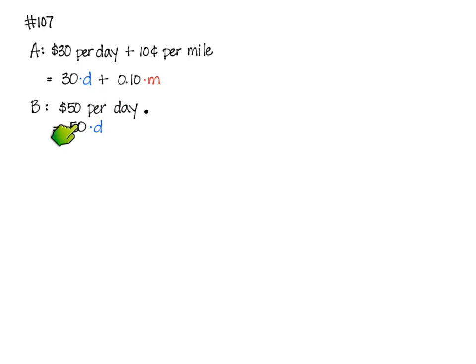The second plan, Plan B, is just $50 per day, period. That's it. So it would just be 50 times the number of days.